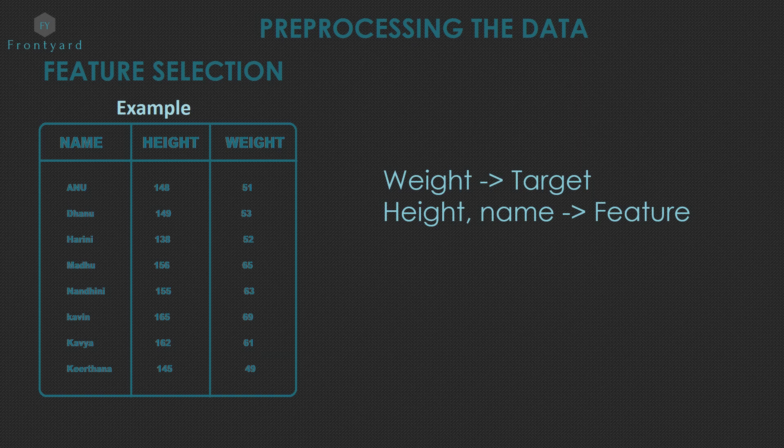That is, we are going to use these to predict weight. Height will contribute to weight, right? Like if a person is very tall, their weight will also be high. But name will not contribute to weight, right? Like if the person's name is Anu and predicting that she will have maximum weight is wrong. So we can select the contributing important feature height. This is a simple example for feature selection.